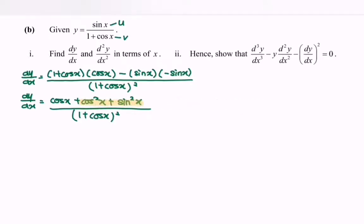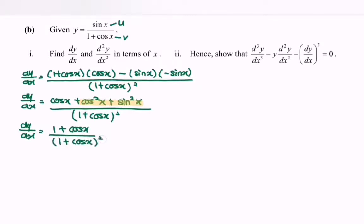Simplify: dy/dx = (cos(x) + cos²(x) + sin²(x)) / (1 + cos(x))². Using cos²(x) + sin²(x) = 1, we get dy/dx = (1 + cos(x)) / (1 + cos(x))² = 1 / (1 + cos(x)).